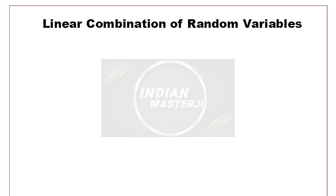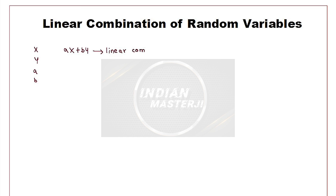In this video we will understand the concept of linear combination of random variables and we will go through a past paper question based on the same concept. Now say for example x and y are any two random variables and a and b, small a and small b, are some constants. Then ax plus by is a linear combination of x and y.